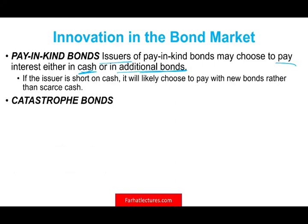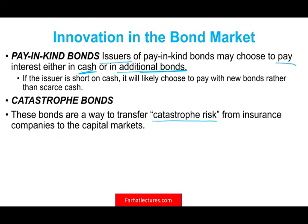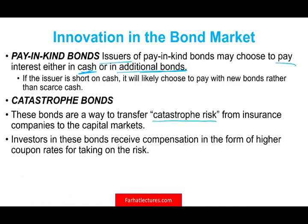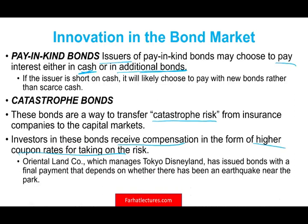Catastrophe bonds are a way to transfer catastrophic risk from insurance companies to the capital market. Investors receive compensation in the form of higher coupon payments for taking on that risk. For example, Oriental Land Company, which manages Tokyo Disneyland, has issued bonds where the final payment depends on whether there has been an earthquake near the park. You take on that earthquake risk, but in return the coupon rate on that bond is higher.